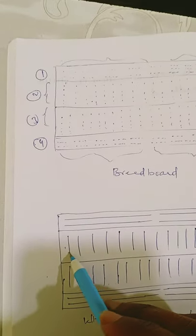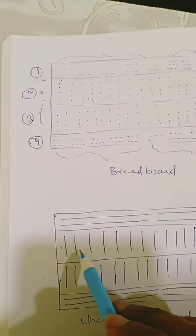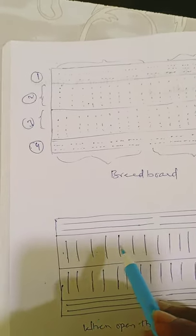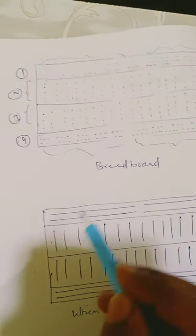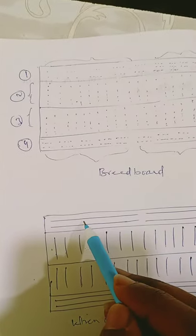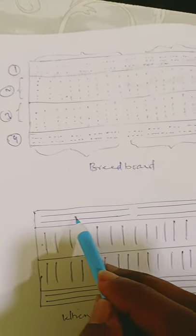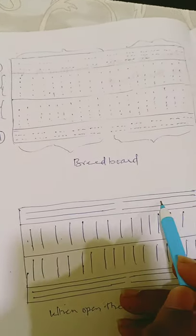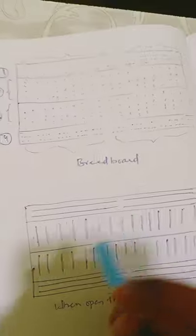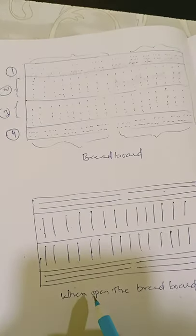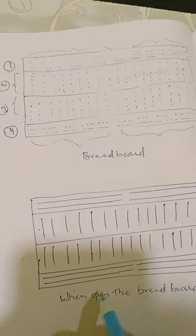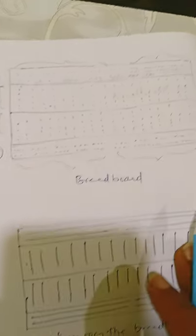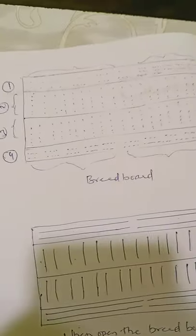Each vertical line can have a different potential. You can find a different potential in this line and this line, and also here and here. That is the overview of the breadboard.